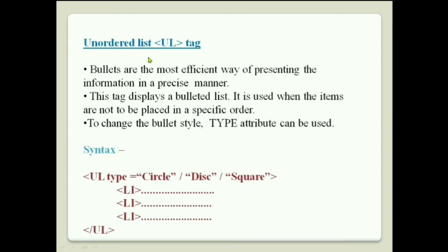Now, unordered list — meaning the UL tag. Bullets are the most efficient way of presenting information in a precise manner. This tag displays a bulleted list and is used when items are not to be placed in a specific order. To change the bullet style, the type attribute can be used. You can type circle, disk, or square within double quotes for the respective bullet styles.